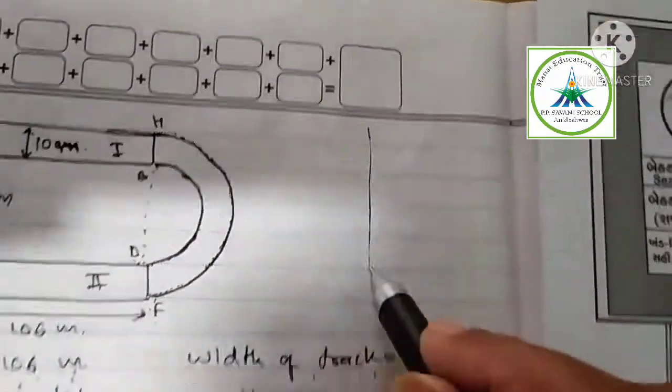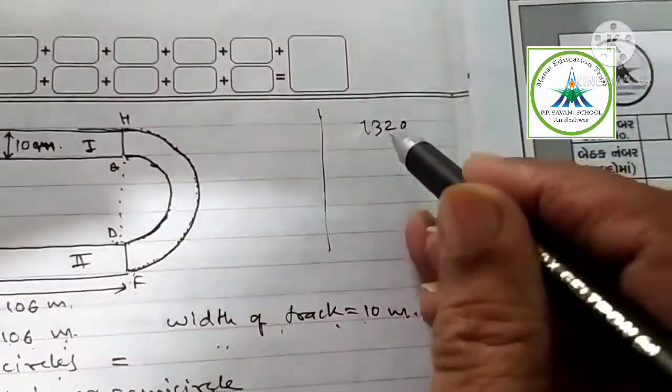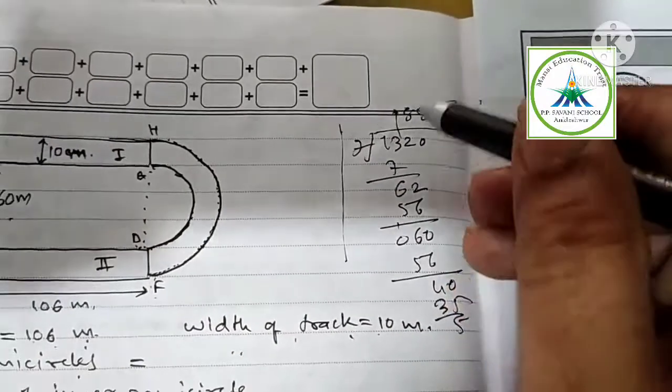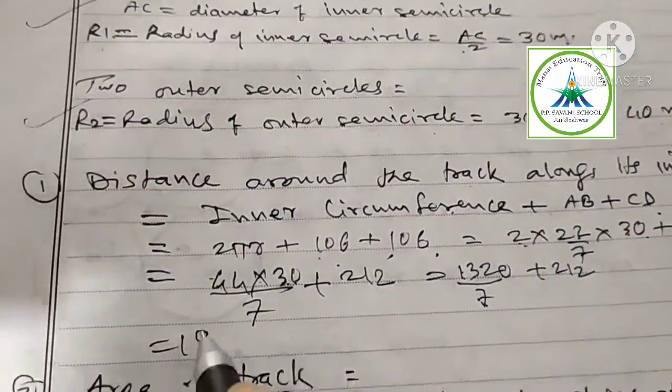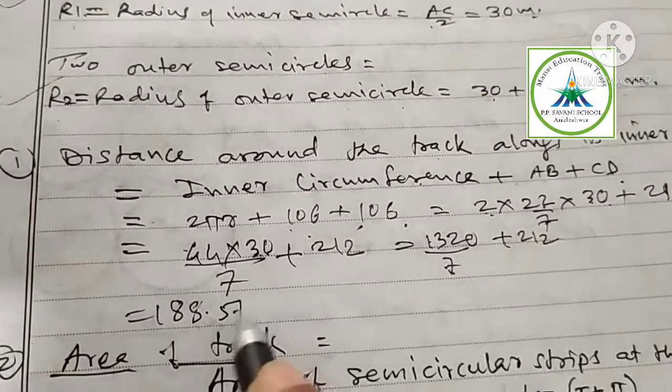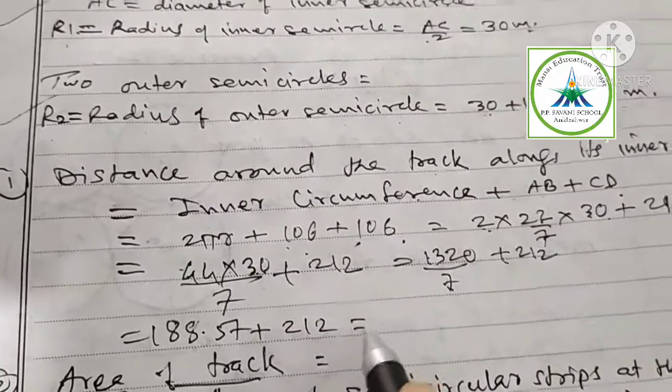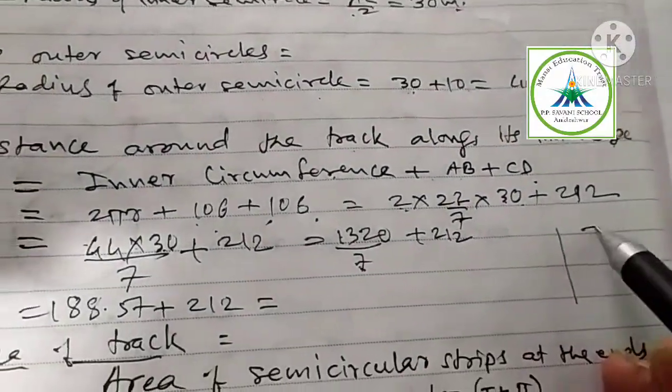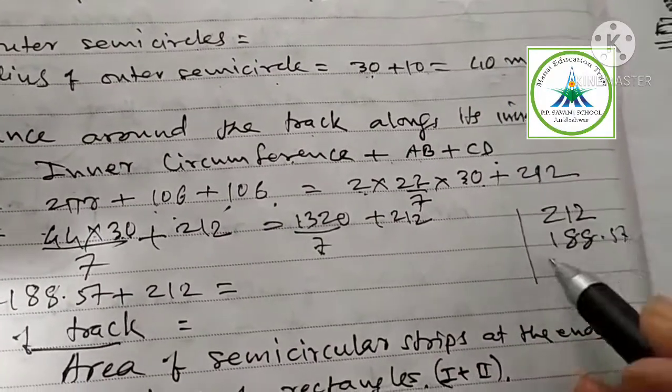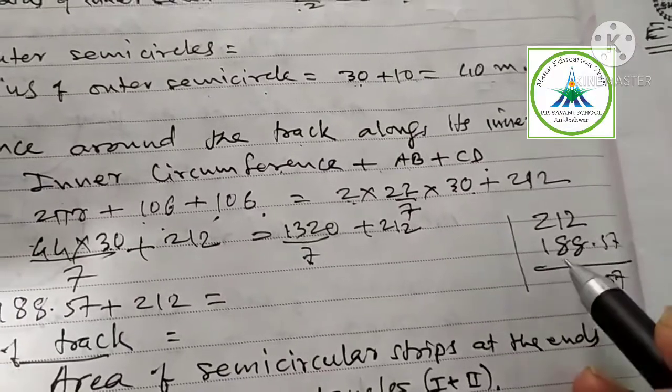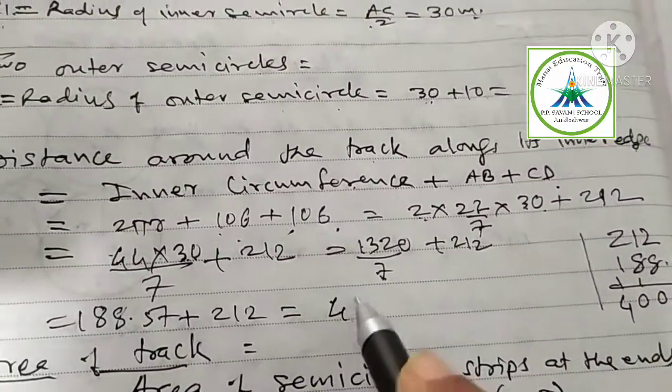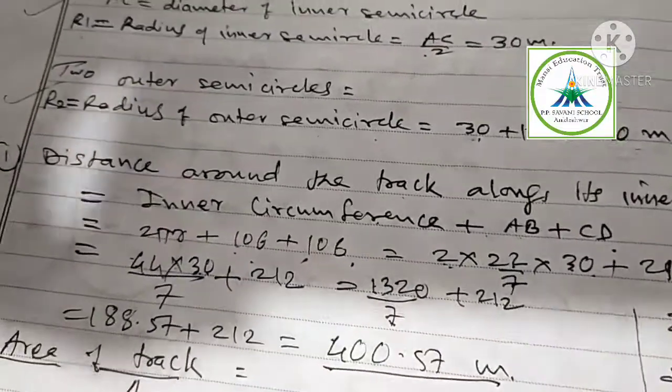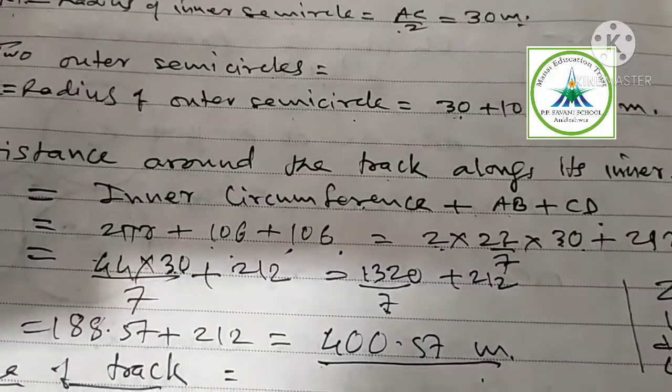After division, 1320 divided by 7, we will take answer up to 2 decimal points. 188.57 plus 212. Now add 212 plus 188.57, you are getting 400.57 meter. You got length of the distance around inner track, inner edge is 400.57 meter.